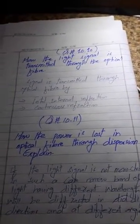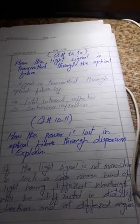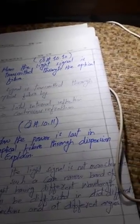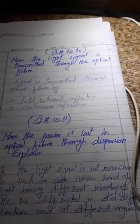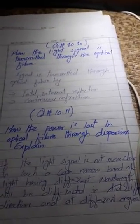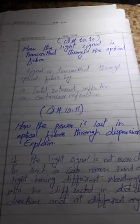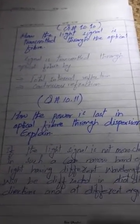Now come to question number 10.10. How the light signal is transmitted through the optical fiber? Signal is transmitted through optical fiber using two phenomena. The first one is total internal reflection and the second one is continuous reflection. We have studied both phenomena. If you have any concern you can recall my previous lectures, lecture number six and five. In those lectures we discussed these two phenomena. These are two methods by which we make light travel from one point to another point.